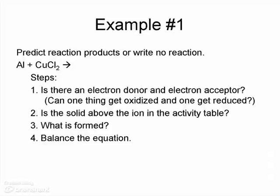Now let's do an example where we predict what reaction products form from the reaction shown. Sometimes we're going to have to write no reaction. So if we're looking at the reaction of aluminum plus copper chloride, there are four steps that we should take to figure out what the reaction products are.